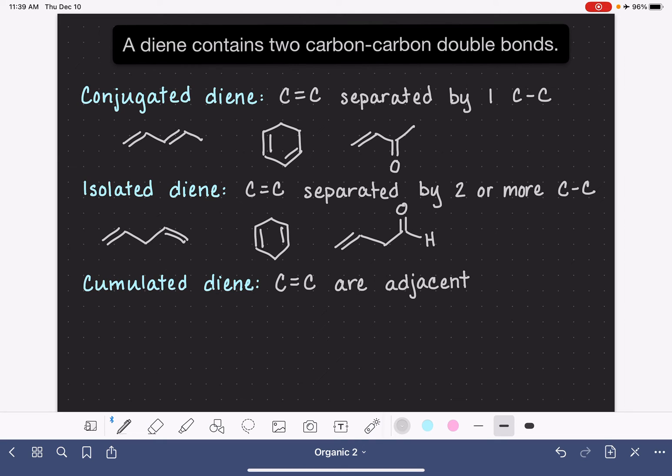These are a little bit harder to draw in line structure because they look kind of awkward to me. So I'm going to switch to condensed notation to represent some accumulated dienes. This would be one example of an accumulated diene. We've got the double bonds that are just stacked one right after each other with no separation between them.